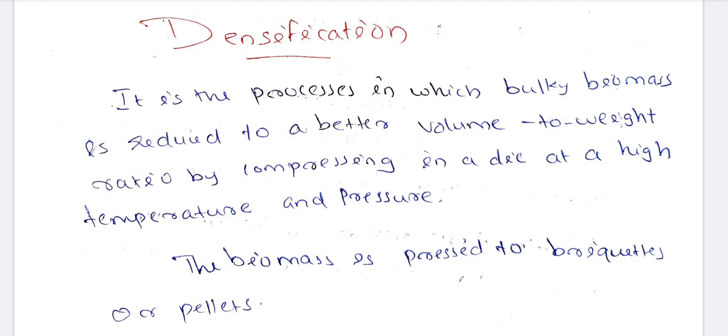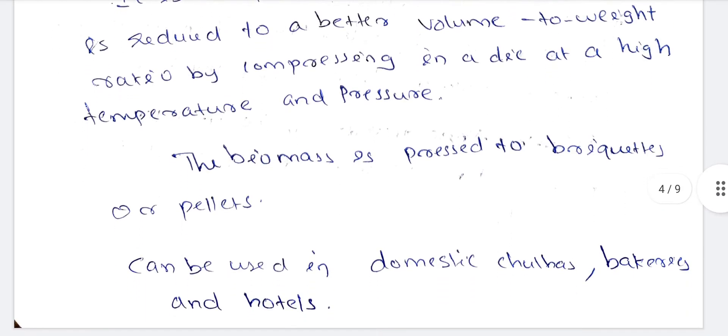For a simple example, we roll it into a roll — that means in a heavy weight of biomass, we compress it into a small form. Biomass is pressed into briquettes or pellets. These can be used in domestic chulas, and chulas can be used in factories, bakeries, and hotels for burning purposes.